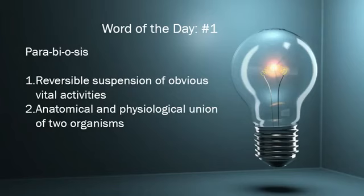For number two, an example may be conjoined twins where they share organs. It may also relate to a parasitic relationship between organisms, and lastly it may be used in ecology to explain a special type of symbiotic relationship — for instance, where two different ant species share the same nest.